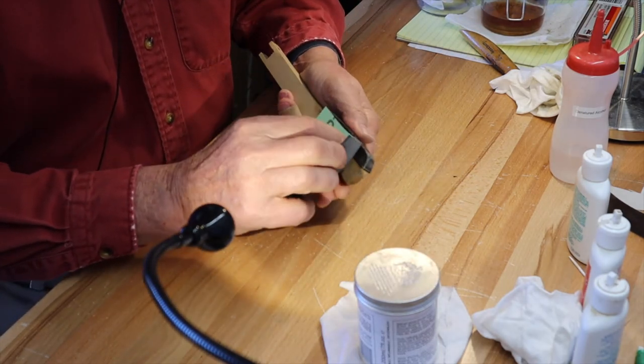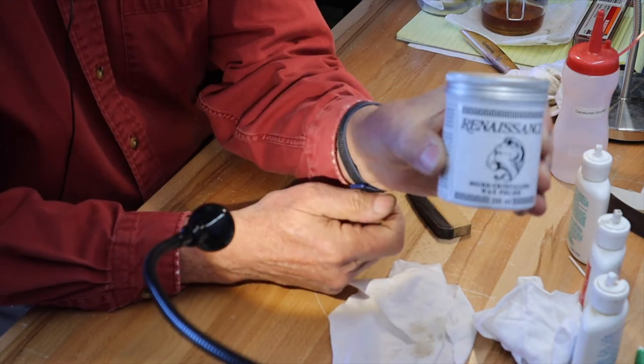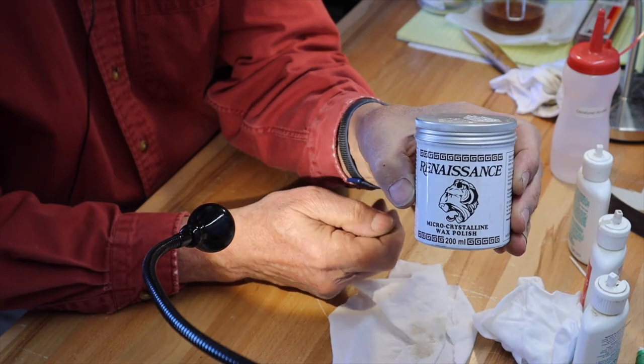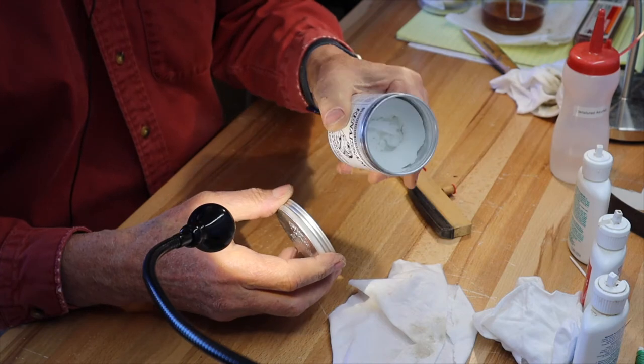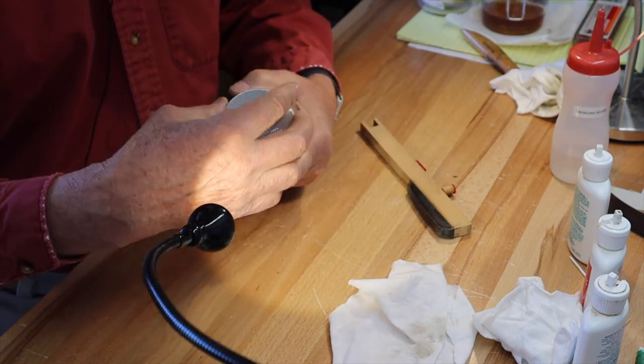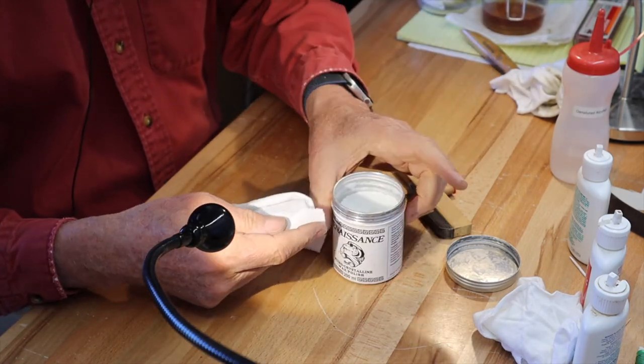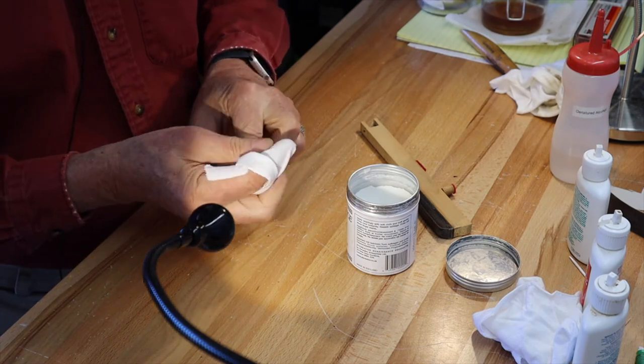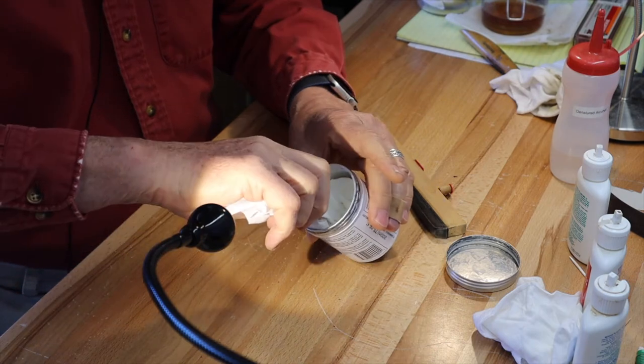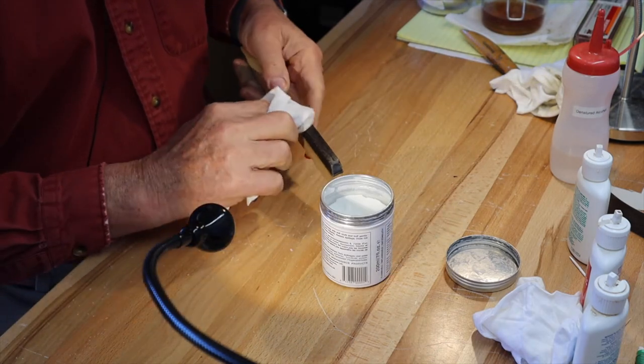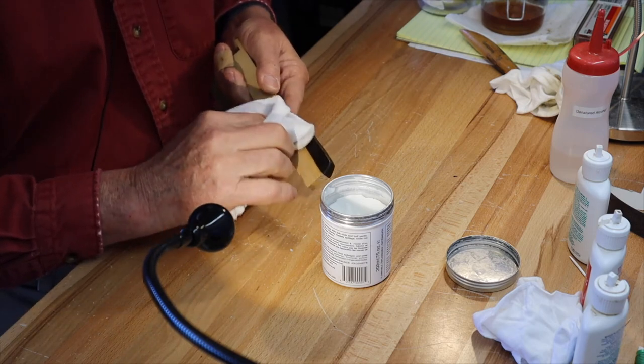Renaissance wax—just synthetic wax, fairly expensive. This can is 10 years old and I've only used about a third of it, so a little bit goes a long way. It's used by museums. Most woodworking supply places will have that. Just take a little bit of a dab on a clean rag and just put a light coat on. We don't need to rub it in particularly; we're just getting a thin film.